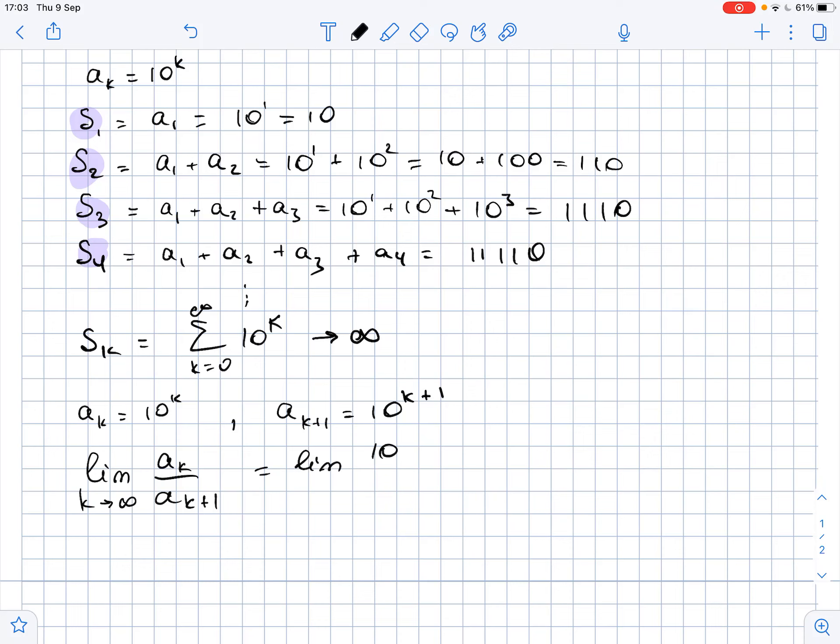This equals the limit of 10 to the power of K over 10 to the power of K+1, where K approaches infinity. Then this equals the limit of 1 over 10, because we have divided both numerator and denominator by 10 to the power of K. So we get that this equals the limit of 1 over 10, where K approaches infinity, and obviously this equals 1 over 10.